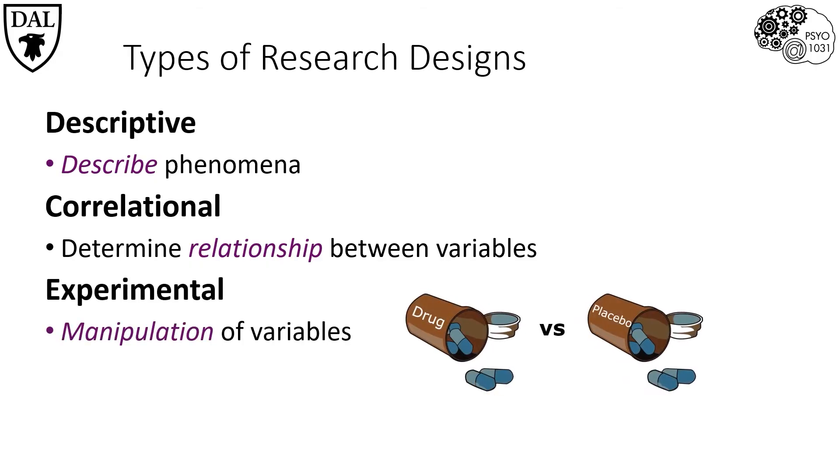The third type of research design is what's known as experimental design. Experimental design is considered the gold standard in the research world as it involves not just the measurement but also the manipulation of specific variables. This type of design allows us to make the strongest conclusions.